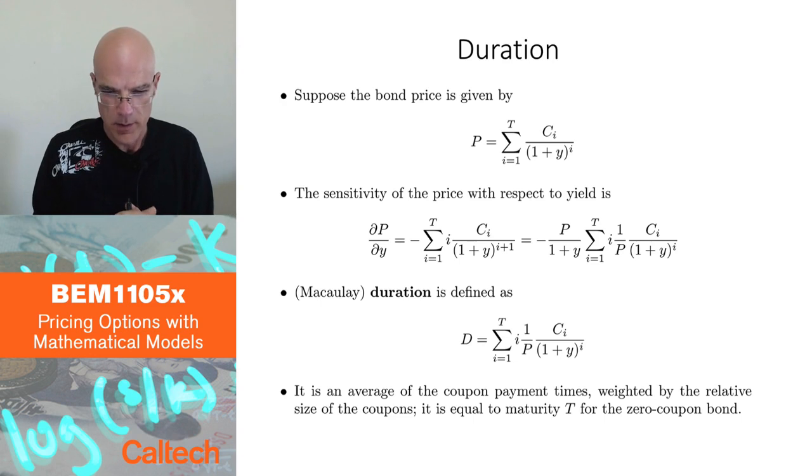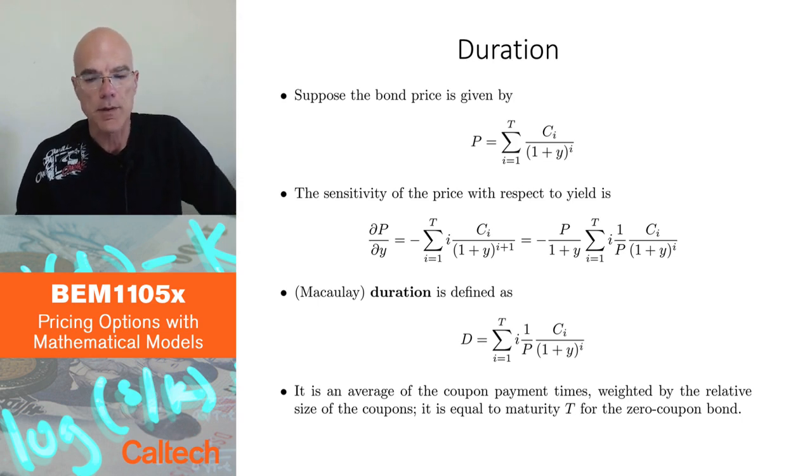Those sensitivities in the bond terminology have special names. The first order sensitivity is called duration and the second order sensitivity is called convexity. These are so classical terms that I wanted to just spend a couple of slides on explaining them although we are not really going to use them elsewhere in this course.